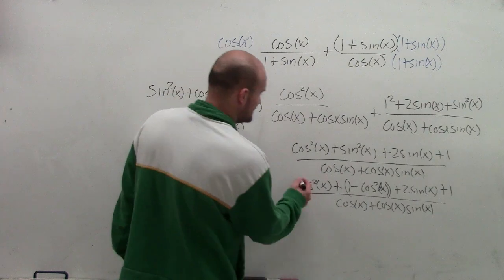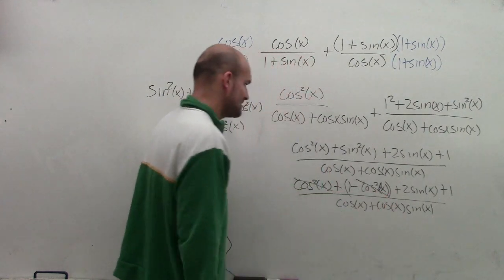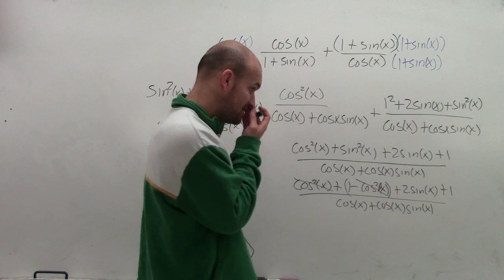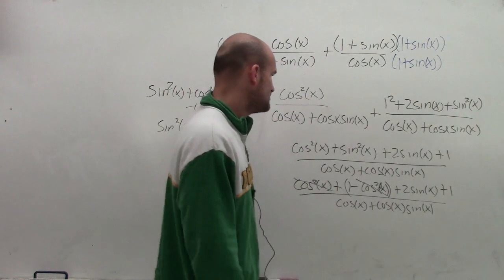So now, looking at this, I know that these are going to subtract to 0. I have 1 plus 1, which is now going to give me 2. And then I'm going to have 2 sine of x.